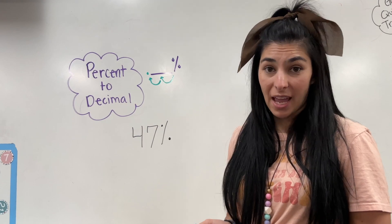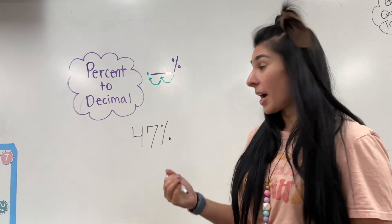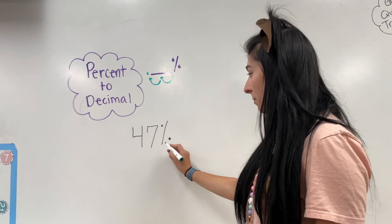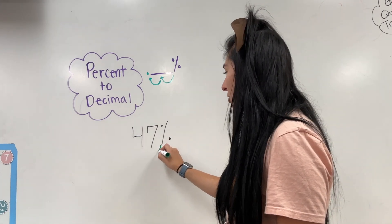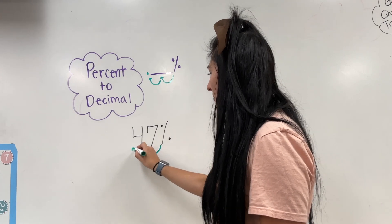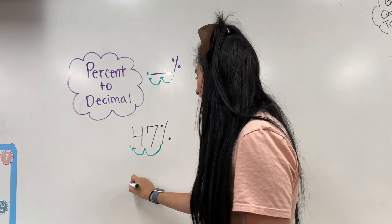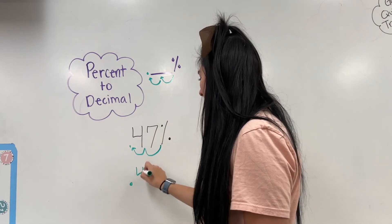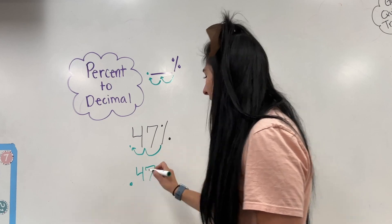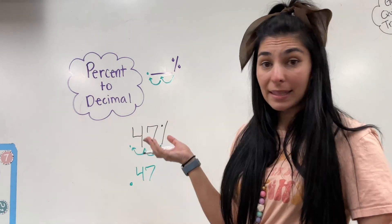Let's say I have 47% and I want to convert that to a decimal. I start with the percent symbol, jump one, jump two — that's where my decimal goes. So this will be 0.47. Easy peasy!